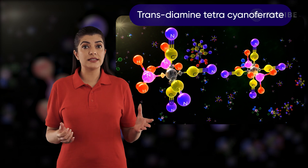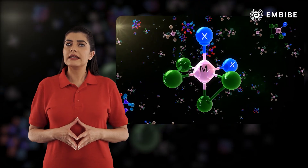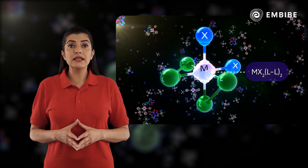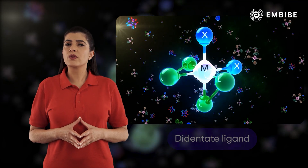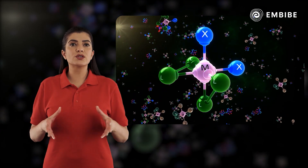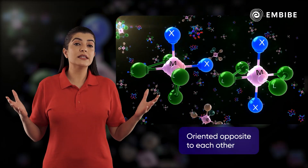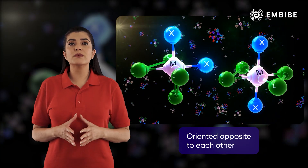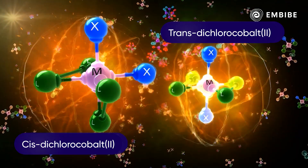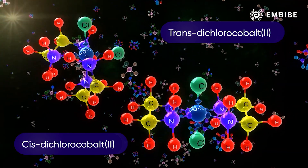Now consider the case mx2(ll)2, where ll is a bidentate ligand. When the x ligands are oriented adjacent to each other, the isomer is designated as cis. However, when they are oriented opposite to each other, the isomer is designated as trans. For example, cis-dichlorocobalt(2) ion and trans-dichlorocobalt(2) ion.